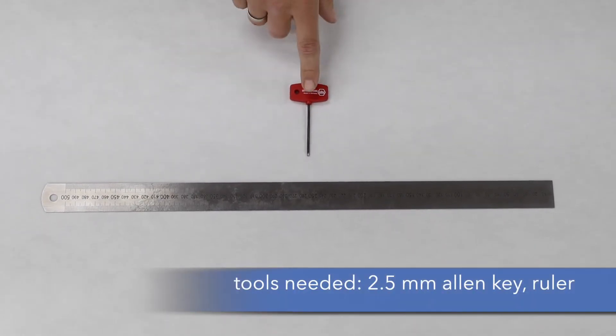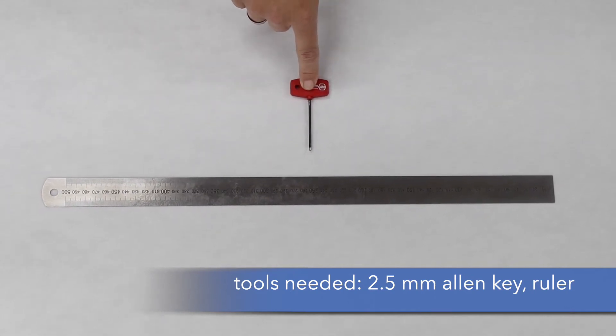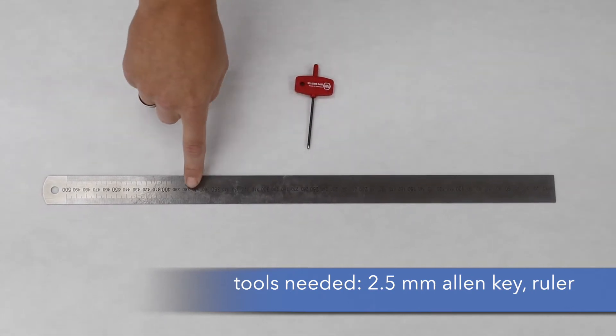For the reset of the encoders we need a 2.5 mm Allen key to open the cover on the back and to change the dip switches, and a ruler.